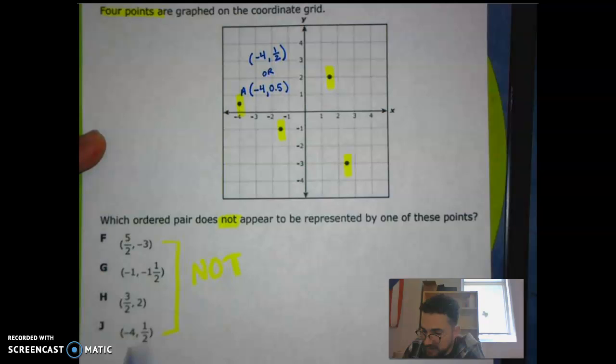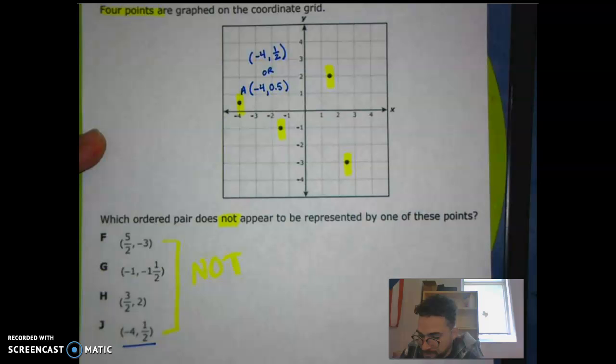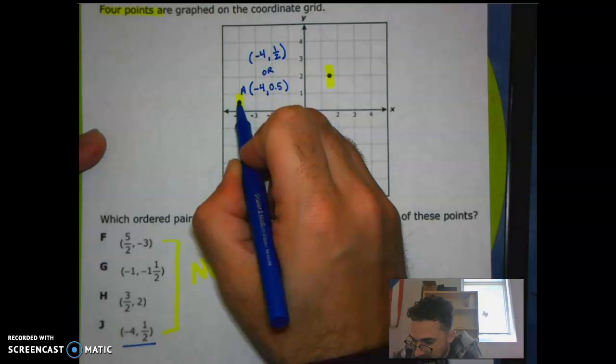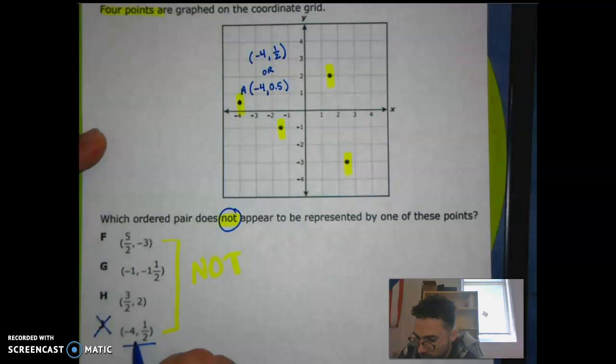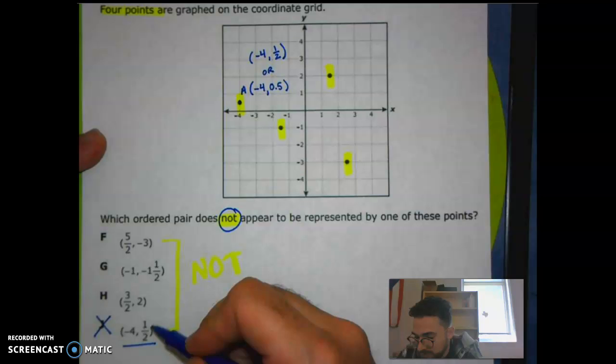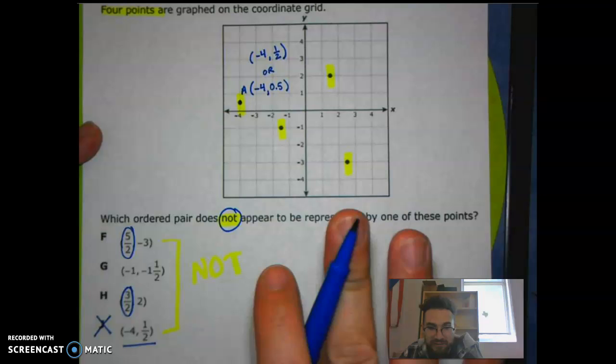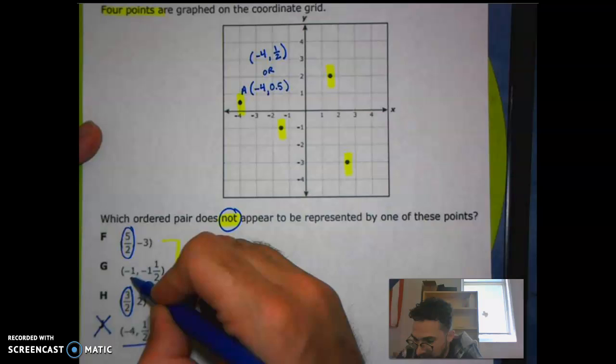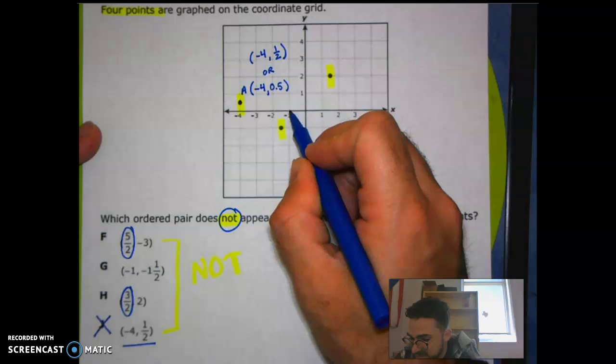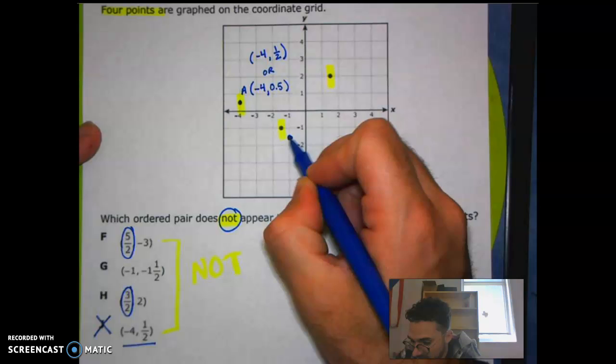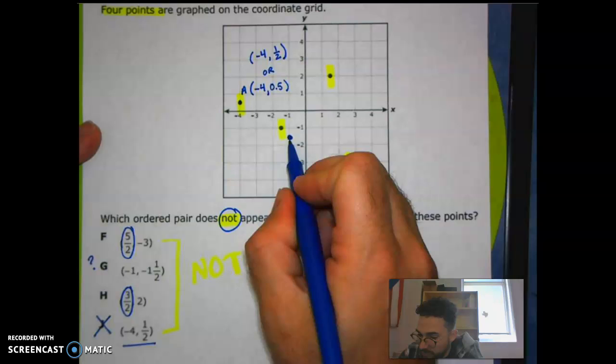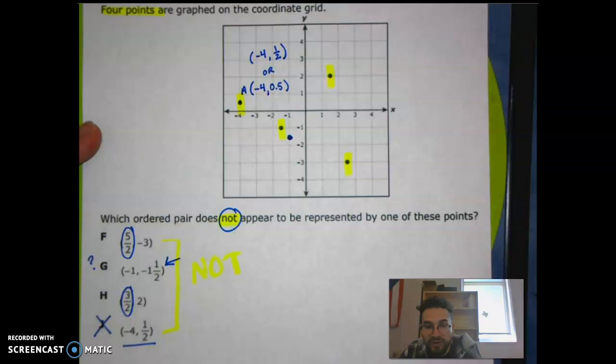Or what I could do is try to graph each one of these points and see if they match with what's going on here. For example, if I took J right here and I did negative four and then a half, I would see that I'm at this point. So you got to be careful because it's asking us for not. This point is represented on the graph. Now, I'm going to do the ones that look easier first. This one and this one, it's going to take me a little bit of work. They look kind of scary, so I'm going to leave them aside. I'm going to start with G. So G says that my x is negative one. If I start at the origin and I move to negative one on the x-axis, I'm right here. Then I got to move down to negative one and a half. That means that this point is going to be right here. I think I already found my answer because that point is not represented anywhere on the graph.